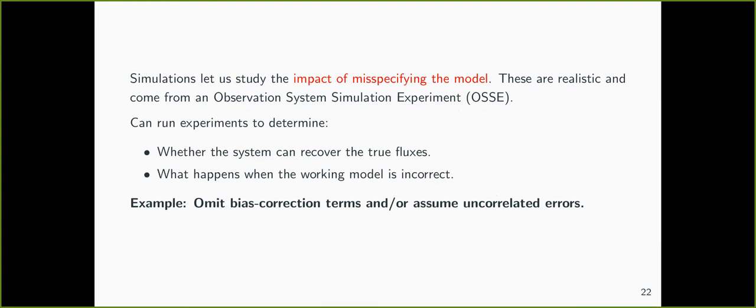Why is WOMBAT different from other flux inversion systems? Other systems don't incorporate bias terms in the model, don't consider spatially and temporally correlated error terms, and don't consider uncertainty on prior parameters. Basically, everything is done to keep the system Gaussian-Gaussian at a tractable dimensionality — which comes with a lot of compromises. What we've tried to do is develop a framework that does not force those compromises, even though conditionally it's still Gaussian-Gaussian, there are many other moving parts in the model.